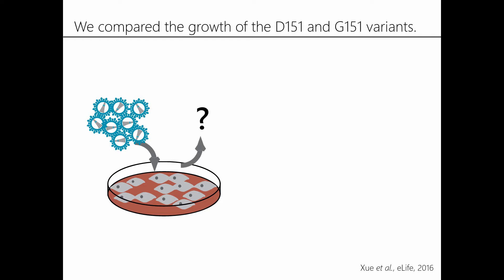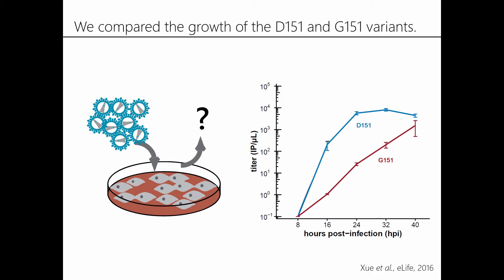We wanted to understand the system a little bit better, so we started off just by trying to assess the growth of these two viral variants in the lab. Here I'm showing you a simple growth curve for the wild-type and mutant variant. You can see that the wild-type variant grows quite robustly, whereas the mutant variant lags a lot behind the wild-type. All of that is in line with what we would expect functionally, but it doesn't really explain why this mutant variant is arising.